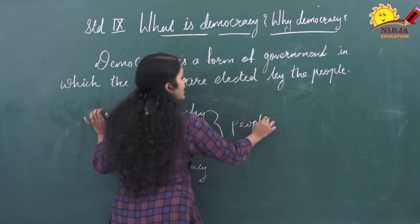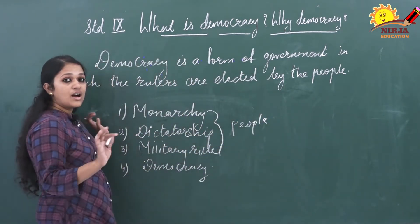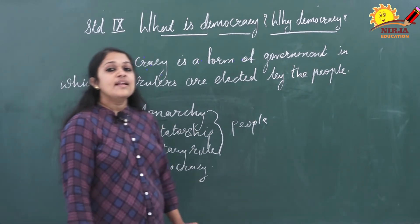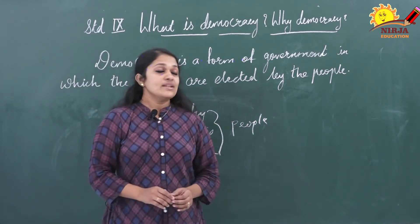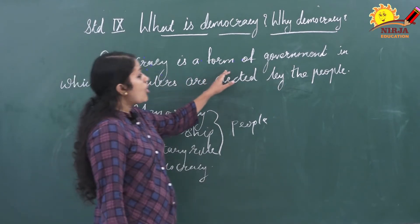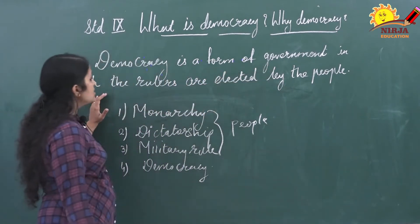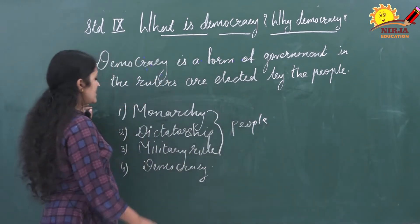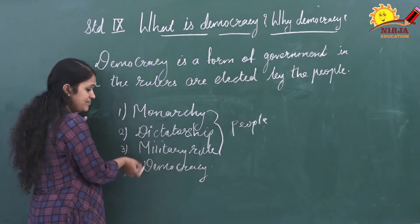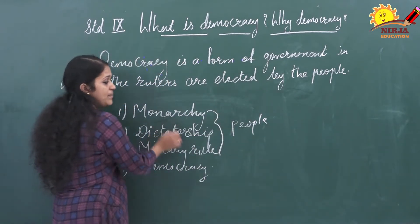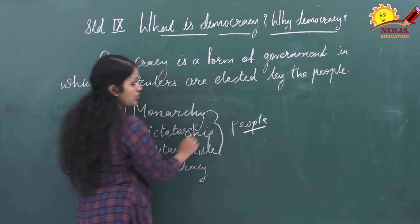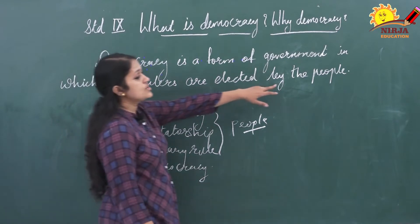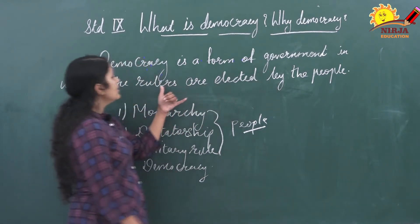In these three forms, people can't choose their ruler. Fourth is democracy. Democracy is a form of government in which the rulers are elected by the people. In the first three forms people can't choose their ruler, but in a democracy people have the right to choose their ruler.